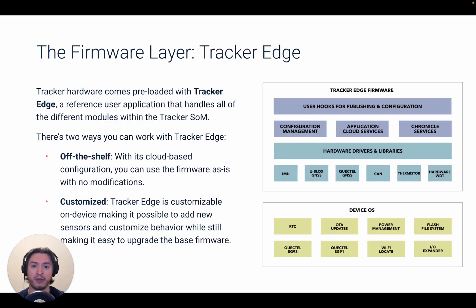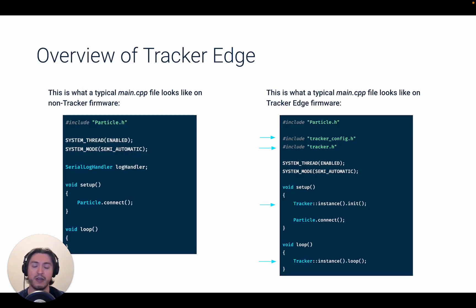Now let's talk about the firmware layer. While you could certainly start from scratch with a blank project, for our Tracker products we have a reference application architecture called Tracker Edge. It's meant to abstract the complexities of interfacing with the different hardware modules such as GNSS and CAN, as well as support the Tracker-specific cloud features that we'll talk about later. The best part is that all this was done with customization in mind, so even though behind the scenes Tracker Edge is handling a lot of stuff, it does so in a way that you're still capable of easily adding your custom work on top of it.